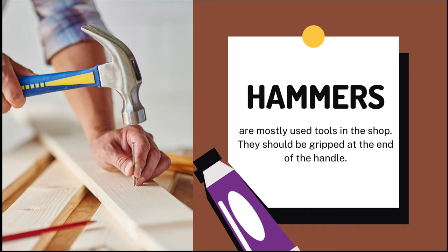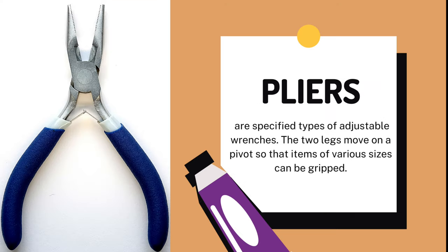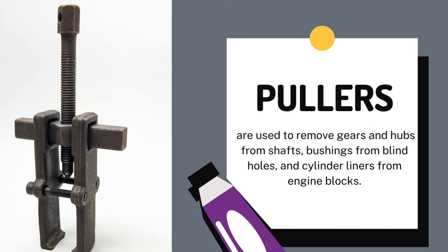We also have hammers, which are the most used tools in the shop. They should be gripped at the end of the handle. Next, we have pliers. They are specified types of adjustable wrenches; the two legs move on a pivot so that items of various sizes can be gripped. Next, we have pullers, which are used to remove gears and hubs from shafts, bushings from blind holes, and cylinder liners from engine blocks.